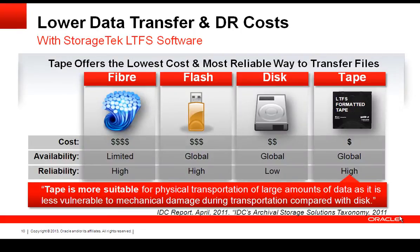You can also lower your data transfer costs and DR costs. LTFS is a big motivator for customers who require data transportability. Storage has different costs, and there's also a different level of difficulty in transporting large amounts of data over fiber, flash, or disk. The postal service has bandwidth — it's very easy to drop a tape cartridge in the mail and send 5 or 8 terabytes of data overnight. You can't do that effectively via fiber, and flash and disk don't make for good transportable media due to reliability and cost issues. IDC has identified tape as really being the most suitable format for physical transportation of large amounts of data.